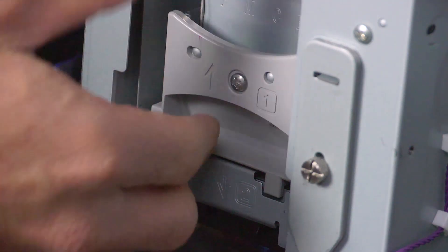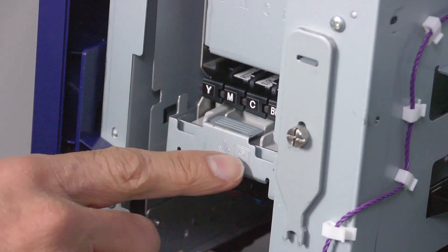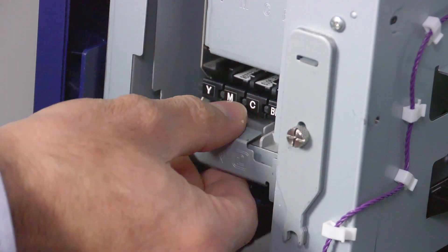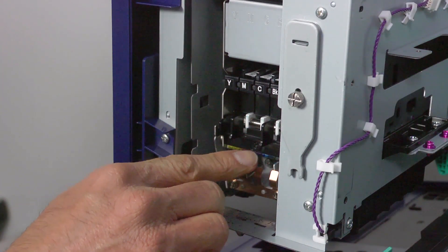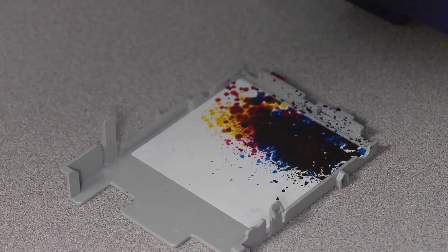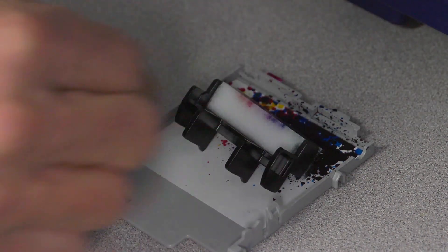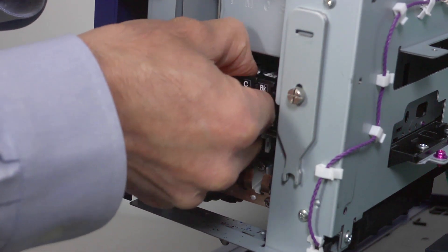Release the upper release lever labeled number one. Then release the lower release lever labeled number two. Now remove the blade cleaner labeled three. Finally, remove the print head and place it on the maintenance tray.